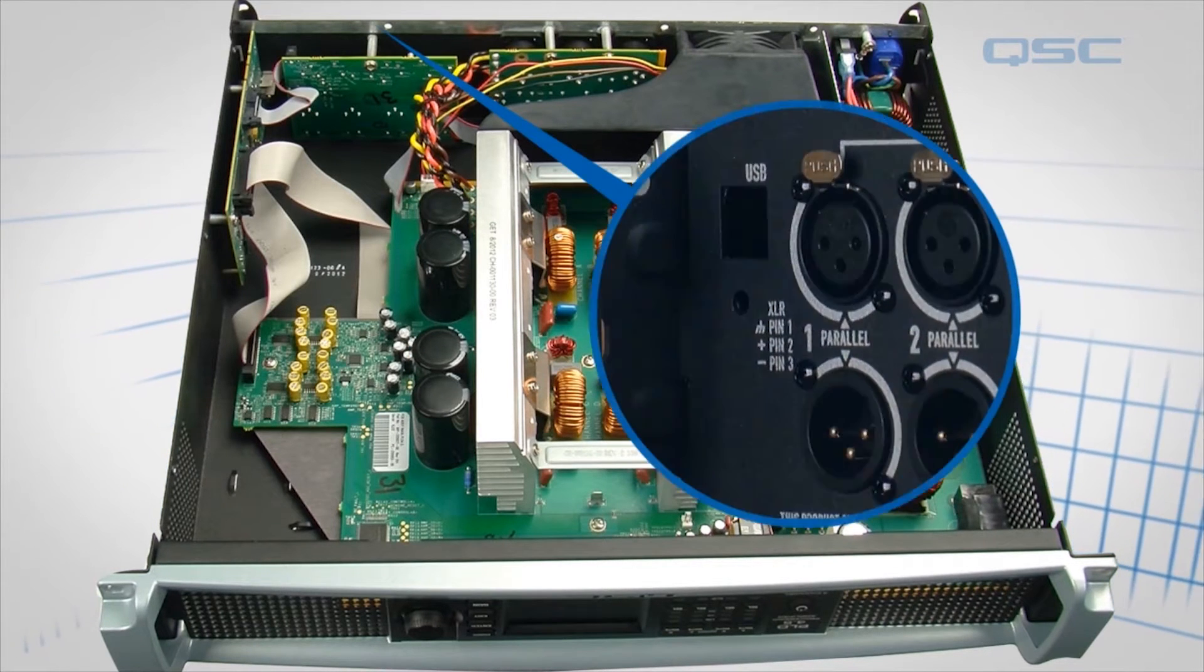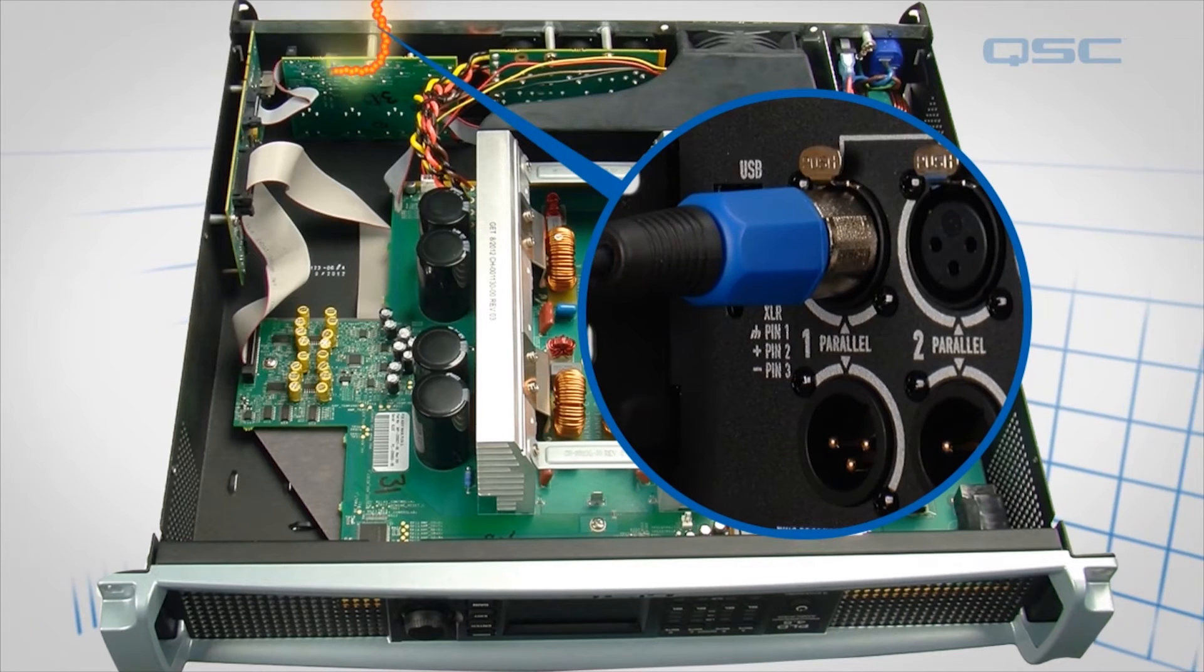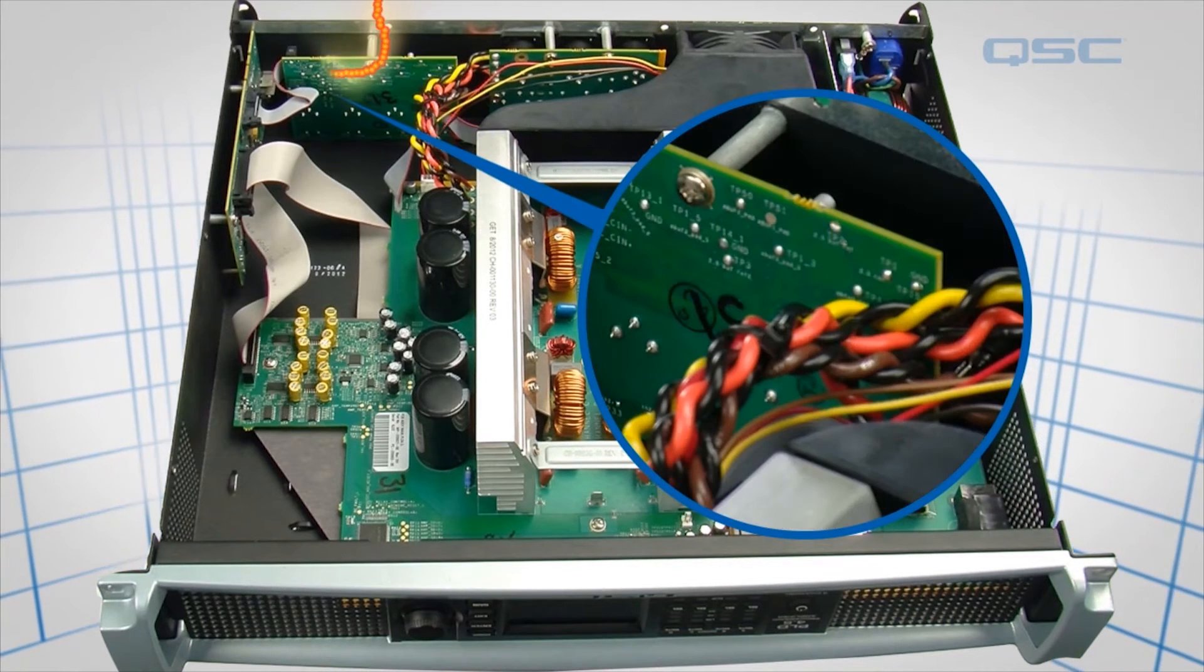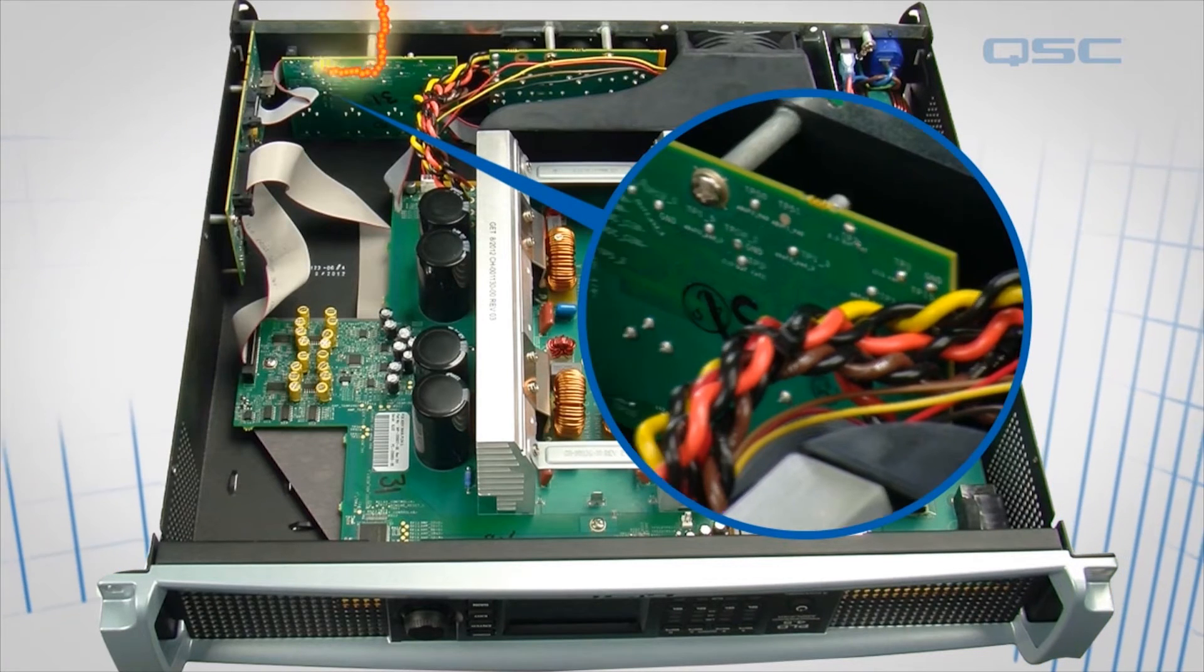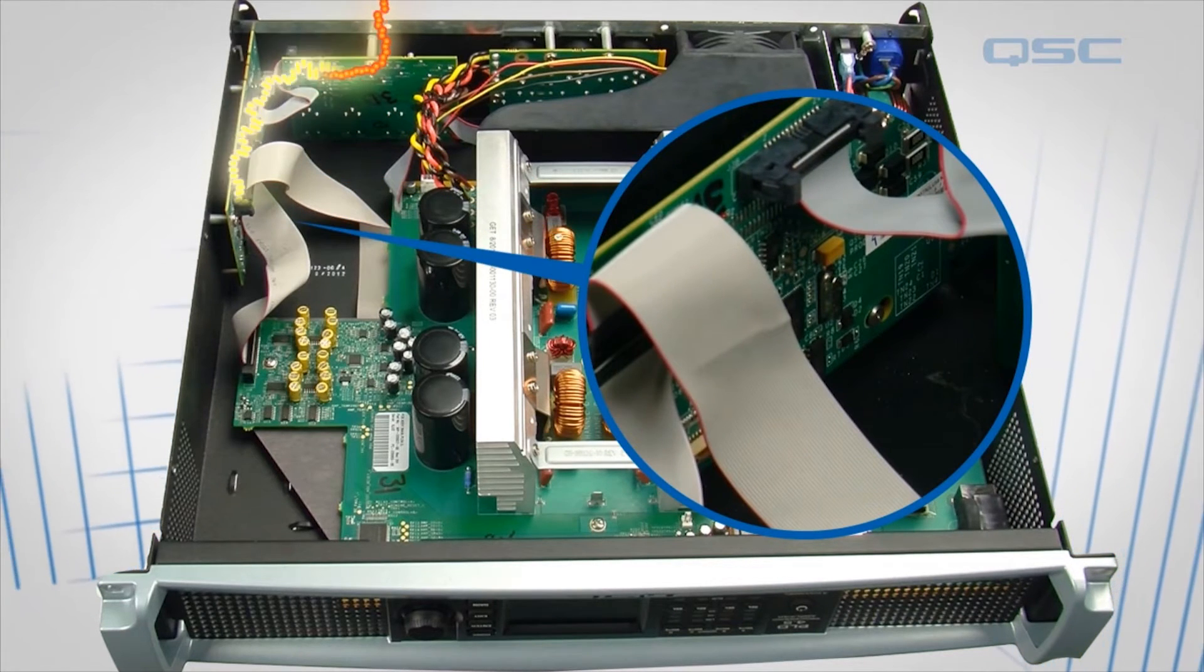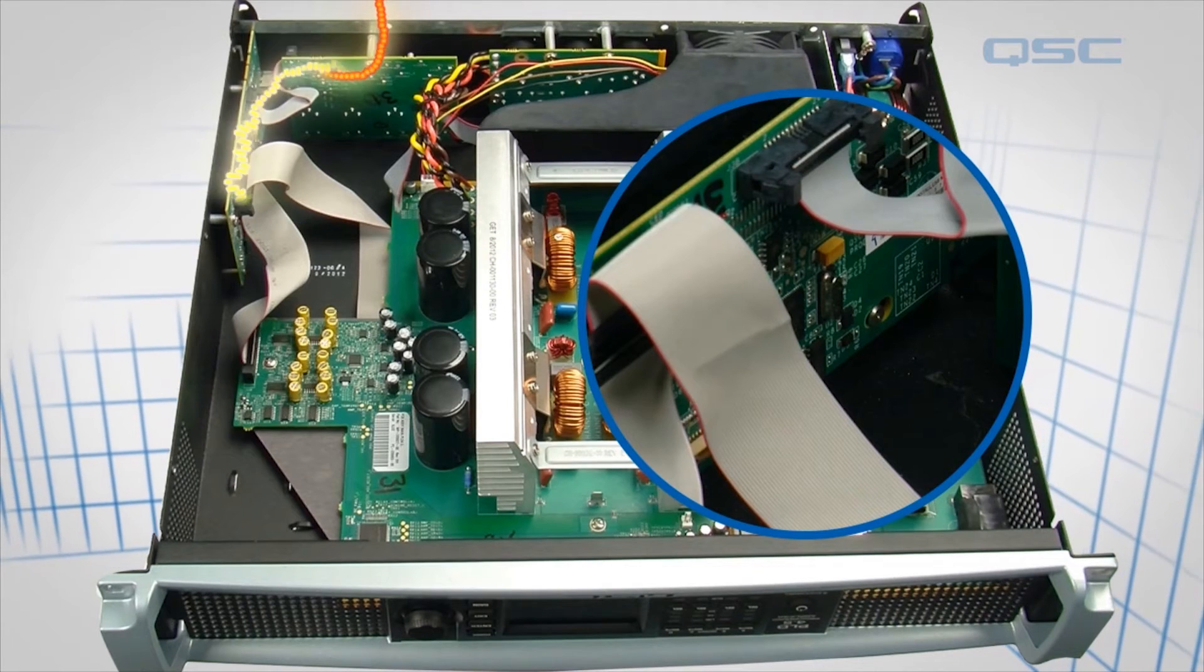Meanwhile, on the other side of the chassis, the audio signal enters the amplifier and is converted from an analog signal to a digital signal on this input board. From here, it's transported to the amplifier's DSP board. This is where all the processing is applied to the signal.